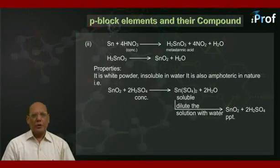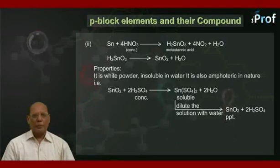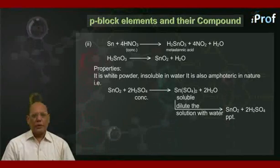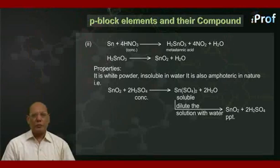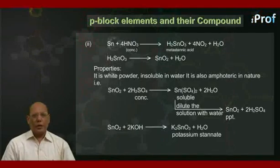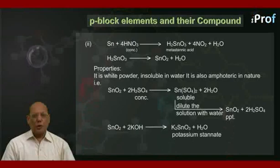Properties: SnO₂ is a white powder, insoluble in water. It is also amphoteric in nature. For example, SnO₂ plus 2H₂SO₄ concentrated gives Sn(SO₄)₂ plus 2H₂O. This compound is soluble, but on diluting the solution with water, it gives an SnO₂ precipitate plus 2H₂SO₄. SnO₂ also reacts with alkali: SnO₂ plus 2KOH gives K₂SnO₃ plus H₂O. K₂SnO₃ is known as potassium stannate.